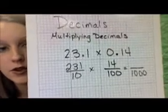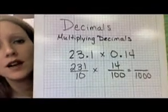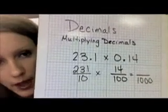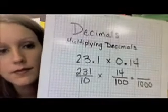231 times 14. I'm not even considering those decimal places. That is the beauty of multiplying decimals. I don't line up the decimal places.